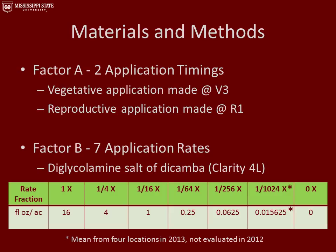For the factors, factor A included two application timings: a vegetative application made at the V3 growth stage and a reproductive application made at the R1 growth stage. Factor B included seven application rates. We used the diglycolamine salt of dicamba, which is the Clarity 4L formulation. We took a 1x rate and fractioned that down all the way to a 1/1024x rate. The data for the lowest rate, the 1/1024x rate, represents the mean from only four locations because it was not evaluated in 2012. We also included an untreated check for comparisons.